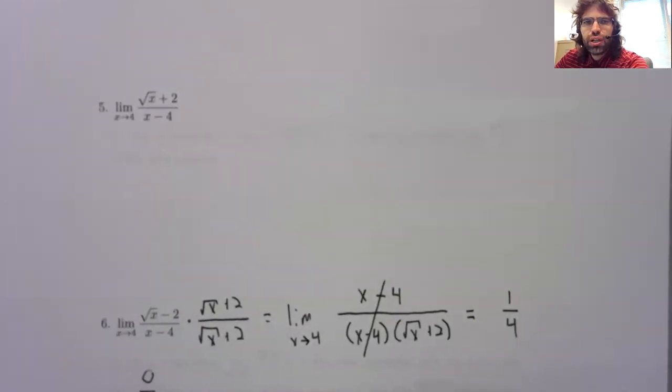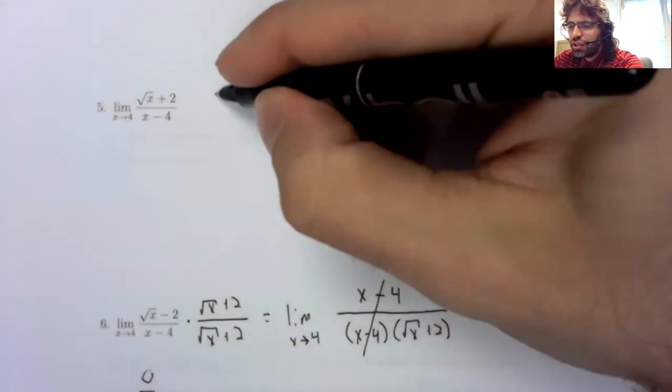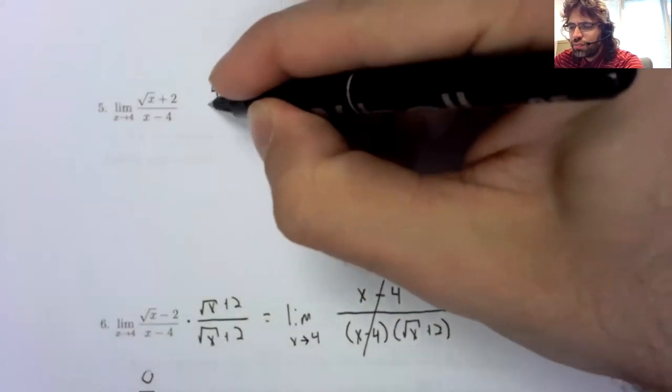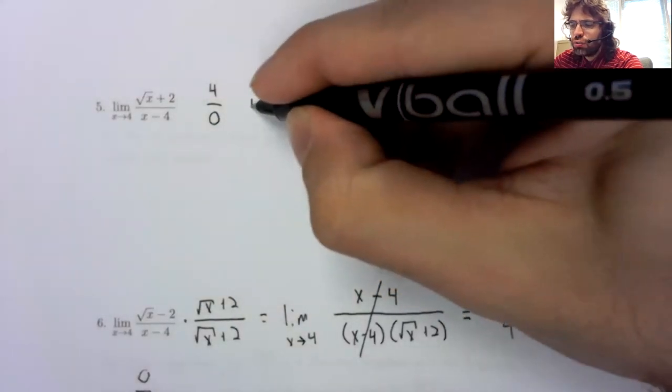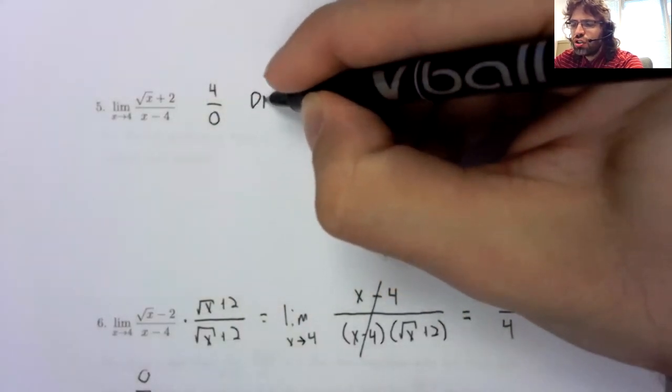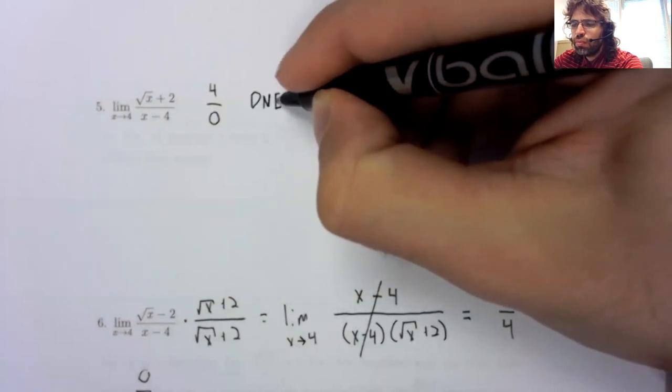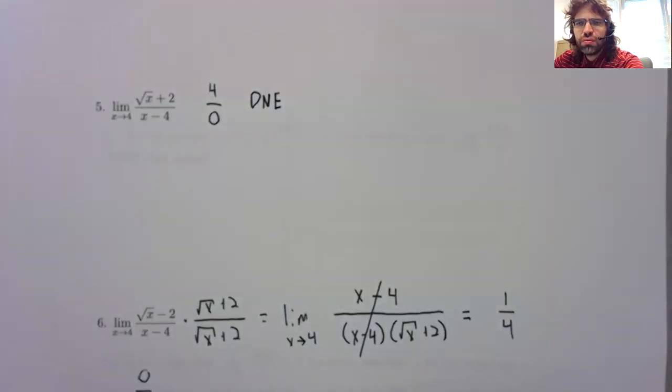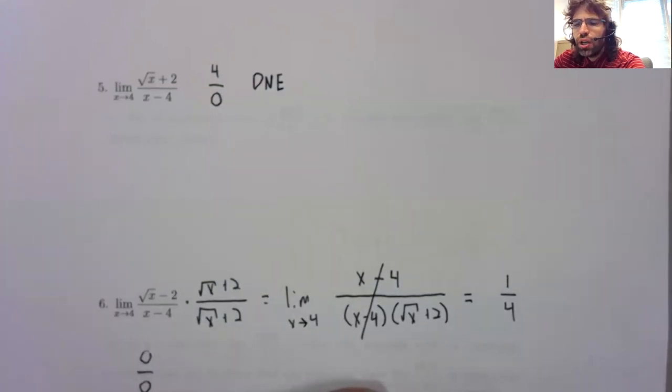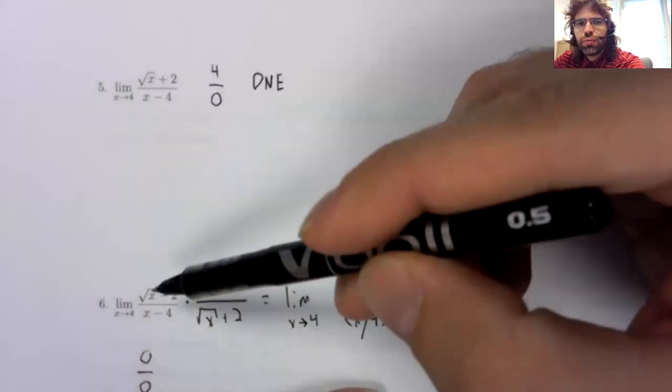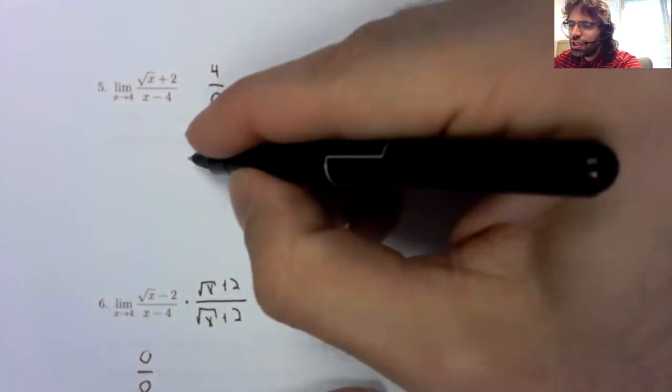Here if we plug zero in, we get four divided by zero. This is a determinant form. This limit does not exist. But if you didn't see that immediately, or if you don't remember that section so well, we'll try the same trick up here that we tried down here.